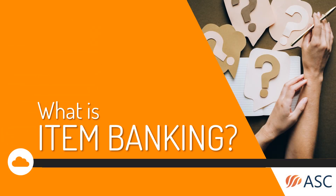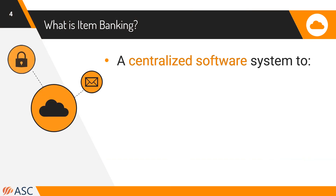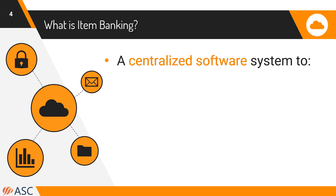So first of all, what is item making? Item making is a centralized software platform that allows you to more efficiently develop assessments. There are a couple of key steps. The first step, of course, is the authoring of test items. Typically they're done online directly in the system, but some systems also allow them to be done offline, including using Microsoft Word templates that can be uploaded.